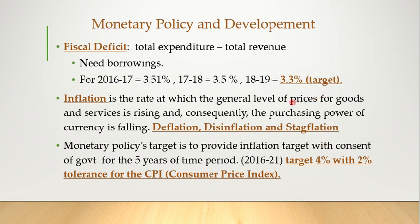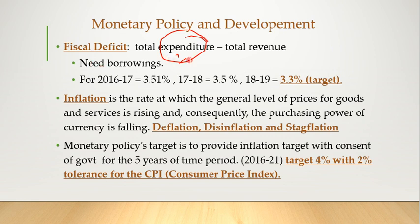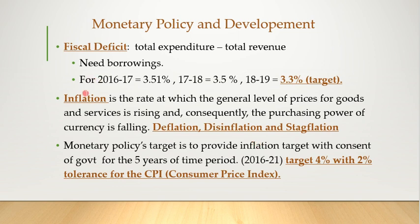If crude oil prices increase, government expenditure increases and fiscal deficit directly goes up. Always remember: if crude oil prices increase, fiscal deficit increases. The government is also not removing its central excise duty because if it does, it loses revenue and the fiscal deficit rises — whereas the government has set a target of 3.3% and wants to reach it.